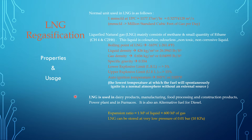LNG is used in many fields. It is used in dairy products, manufacturing industries, food processing industry, plastic industry, and construction products. It is mainly used in power plants to produce power, in boilers, and in furnaces in industries. It is also an alternative fuel for diesel for heavy trucks.